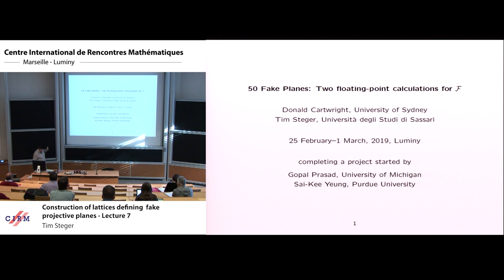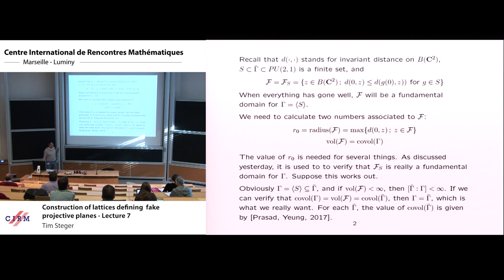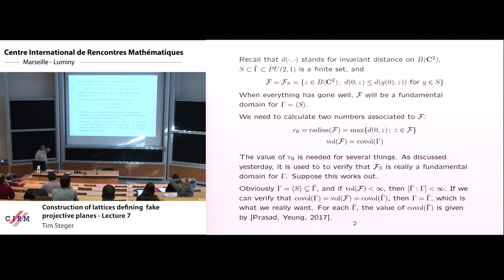Today I talk about the two big floating-point calculations that were involved in this project. Remember that D stands for invariant distance. We have the set S, which is inside gamma-bar, and we hope that it's generators for gamma-bar. We construct this fundamental domain. As I explained in my previous lecture, if everything has gone well, we'll be able to see that F is a fundamental domain for whatever group S generates — I'll call that gamma. So there are two things we need to calculate about the fundamental domain.